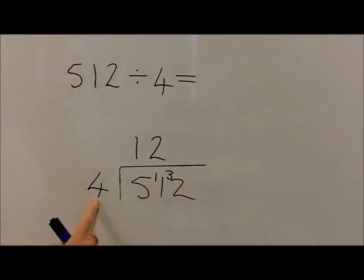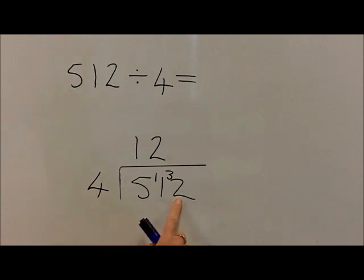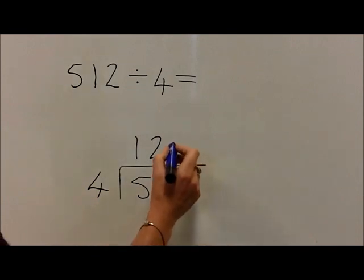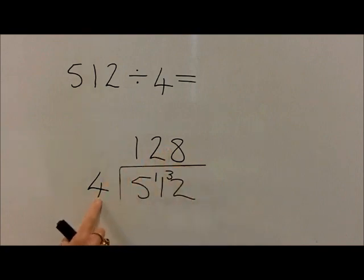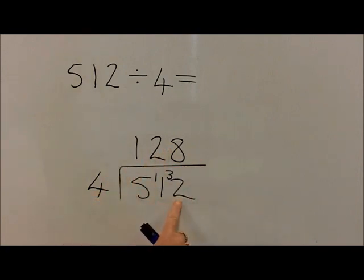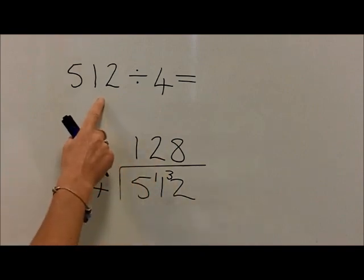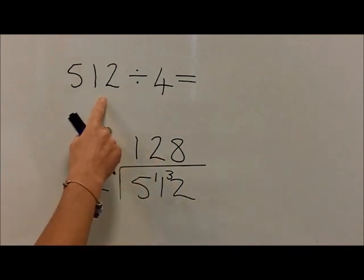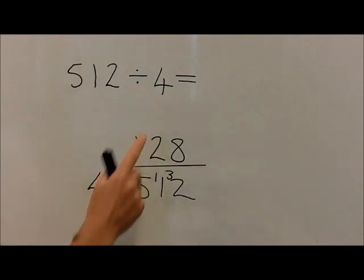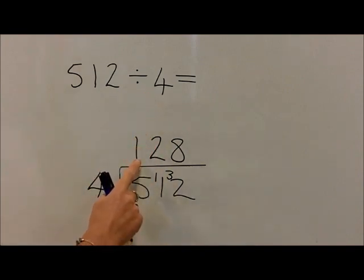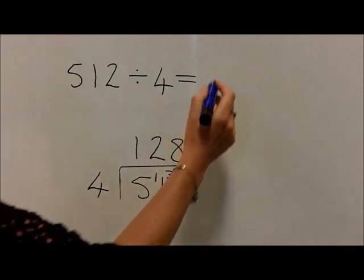Now ask the question how many 4's are in 32. Children should know that 8 times 4 is equal to 32. Therefore there's nothing left over as a remainder. So the question 512 divided by 4 is equal to 128.